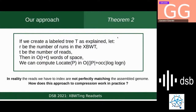We also show a result for the Wheeler graph applied to the labeled tree. If we have such a labeled tree and let r be the number of runs in the XBWT and t be the number of reads, then in space O(r + t), we can compute locate(p) in O(|p| + occurrences × log log n). The problem in practice is that the reads we have to index are not perfectly matching the assembled genome, so we need to understand how this compression approach works in practice.